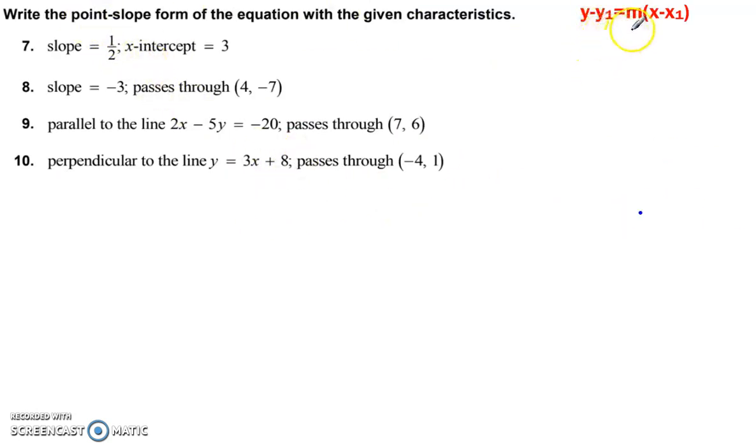Point slope form is y minus y1 equals m times x minus x1. Make sure you know this. Make sure that you remember these are minuses. I saw a few of you change that to plus today. The only time that changes is if your coordinates are negative. Alright. X-intercept. So that's where it crosses the x-axis, which means the y value there is 0. So at the x-intercept, y is 0. So now we have a slope. We have a point. Point slope form. Super easy. x and y. Always label your coordinates. Minus 0 is equal to 1 half times x minus 3. There you go. That's point slope form.